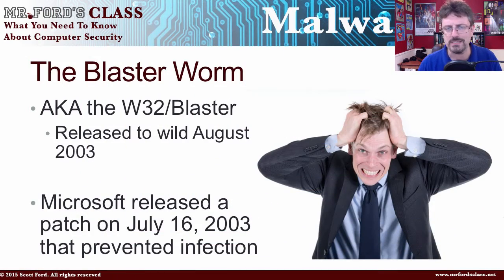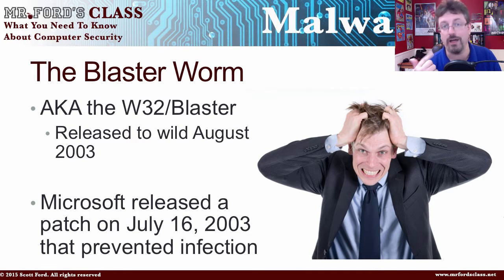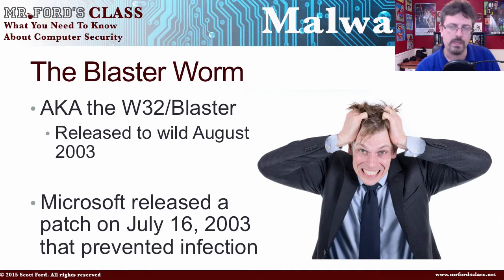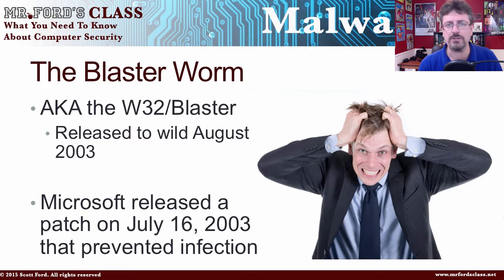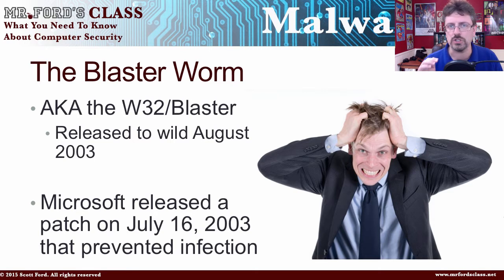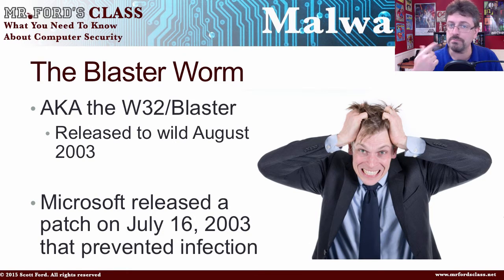And so this was the Blaster Worm, also known as W32 Blaster. Here's the ironic part: it was released in August of 2003, but Microsoft had already discovered the security flaw and released a free patch that you could have downloaded and installed on your computer as of July 16, 2003. So if people had updated their computers, they would not have gotten this worm.